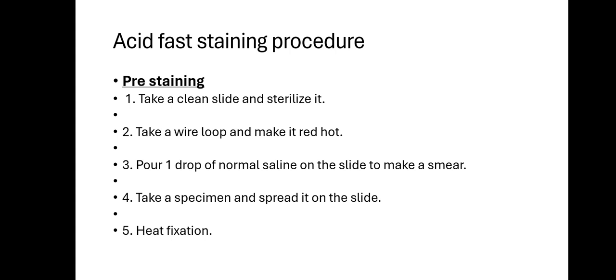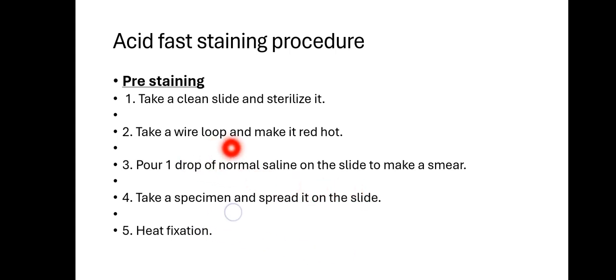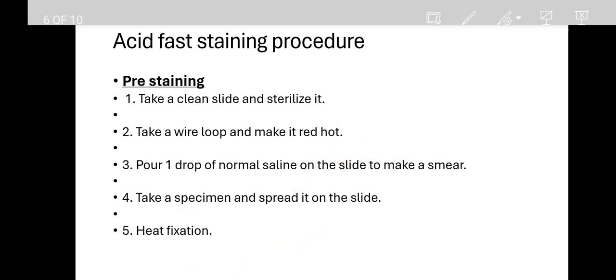Then take a wire loop and make it red hot — also sterilize it by placing it over the flame. Then pour one drop of normal saline solution on the slide to prepare a smear. Then take a specimen and spread it on the slide with the help of the wire loop.